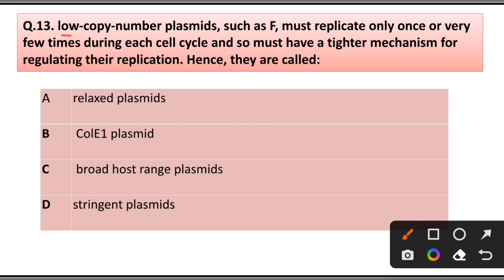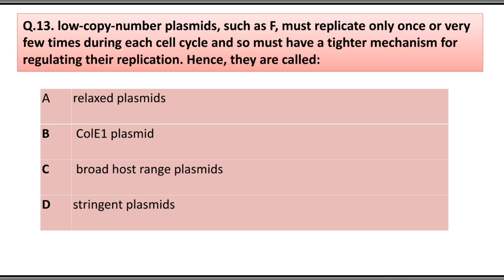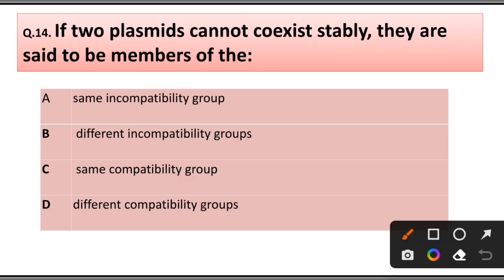Question number 13: Low-copy-number plasmids such as F must replicate only once or very few times during each cell cycle and so must have a tighter mechanism for regulating their replication. Hence they are called: A) Relaxed plasmids, B) ColE1 plasmid, C) Broad host range plasmids, D) Stringent plasmids. Answer is option D, stringent plasmids.